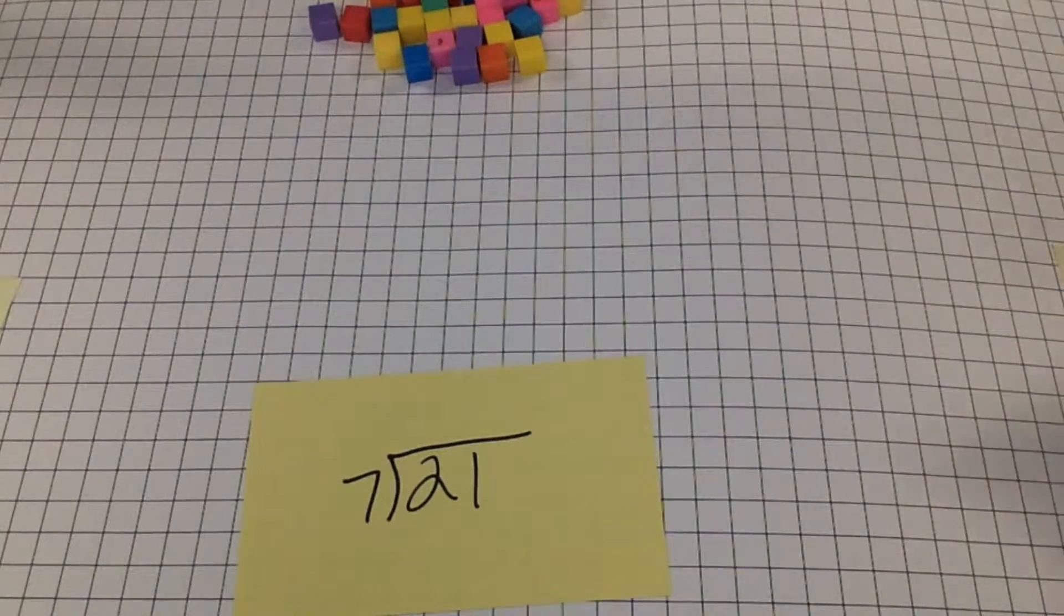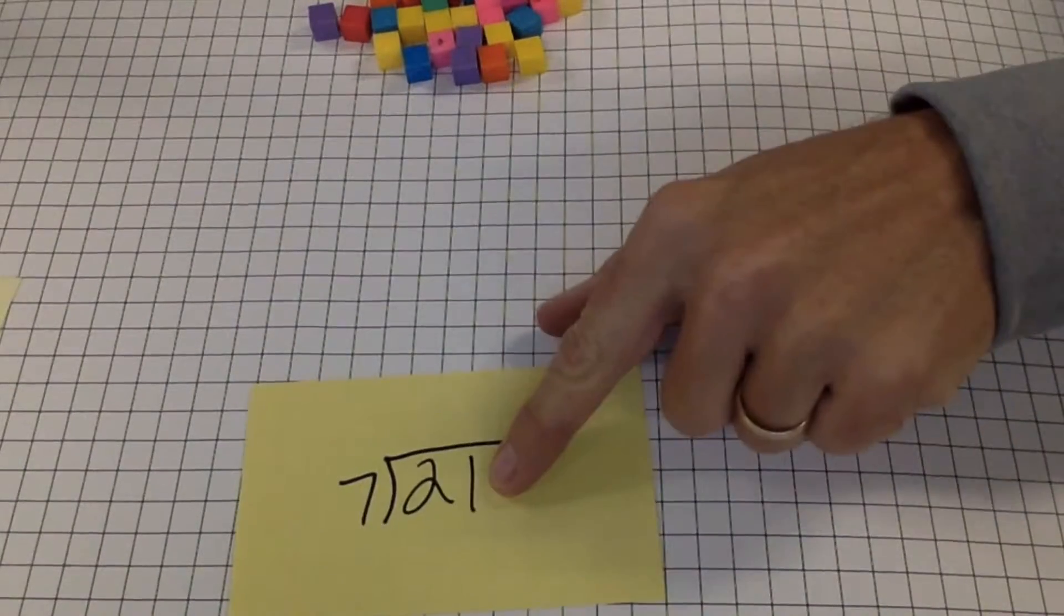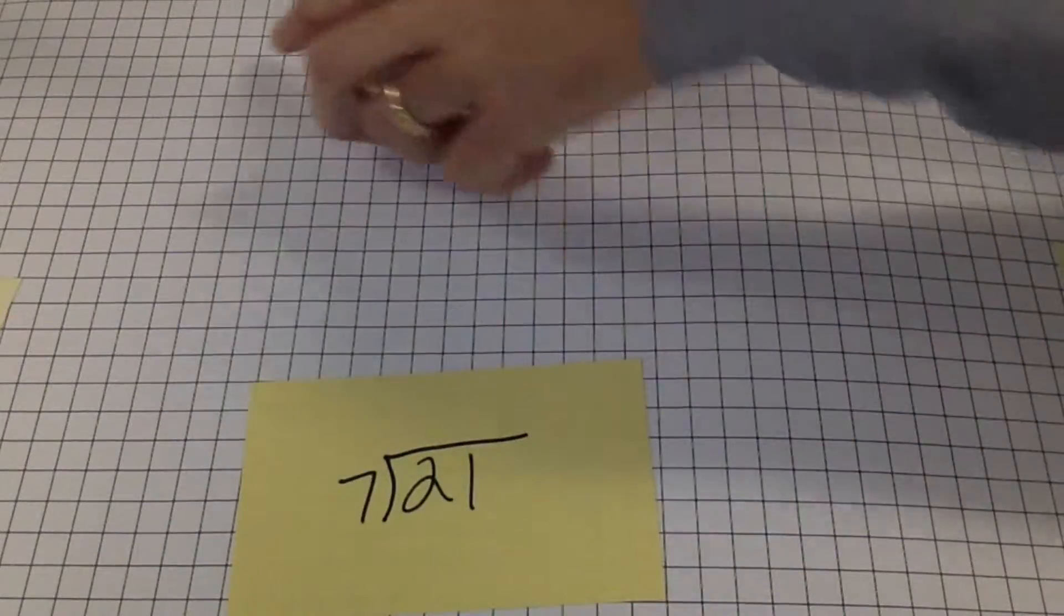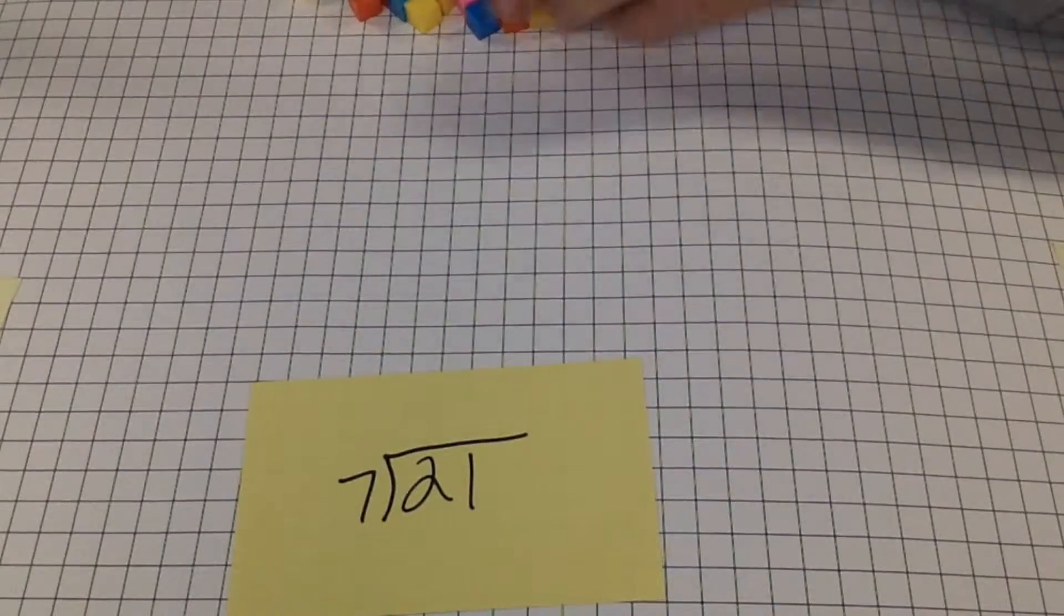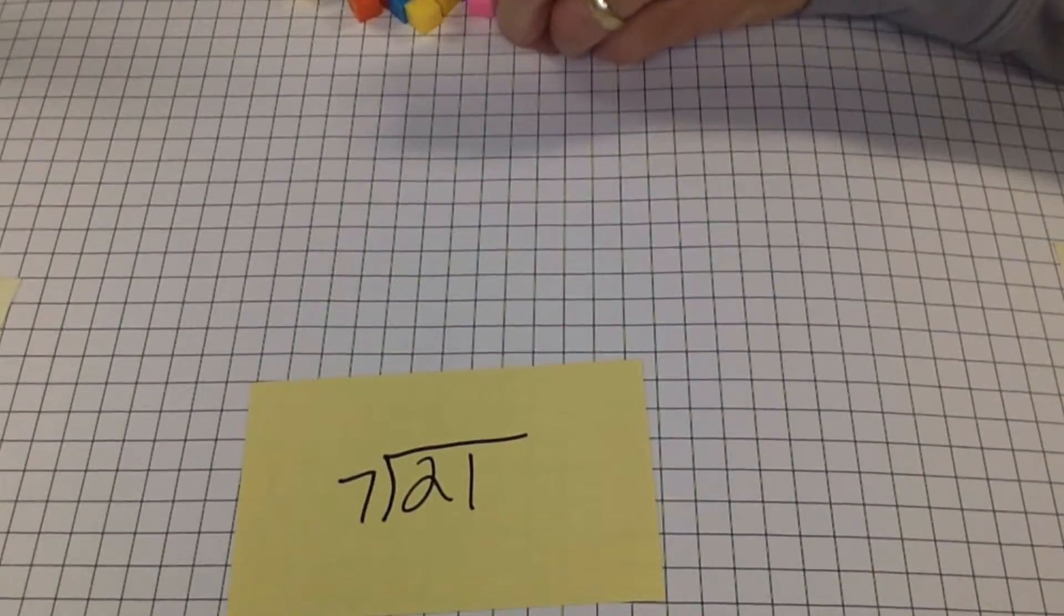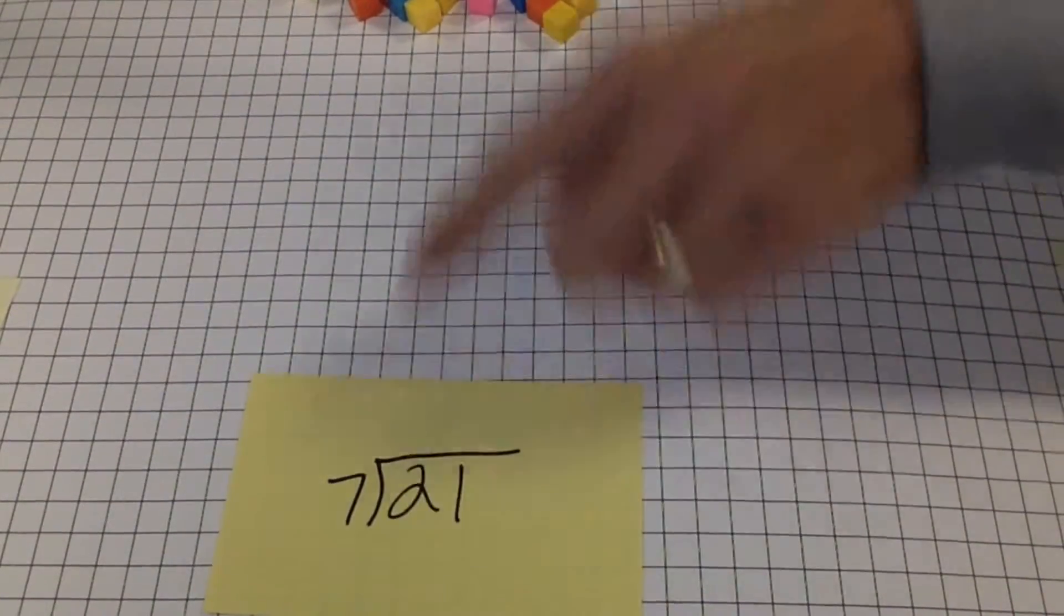And what I'm going to do is take some cubes. How many cubes am I going to take? I'm going to take my dividend, the number that I'm being divided. So I'm going to count out 21 cubes. I'm not going to count them all out right now. That's a waste of time. What I'm going to do is count them out as I make rows of 7.